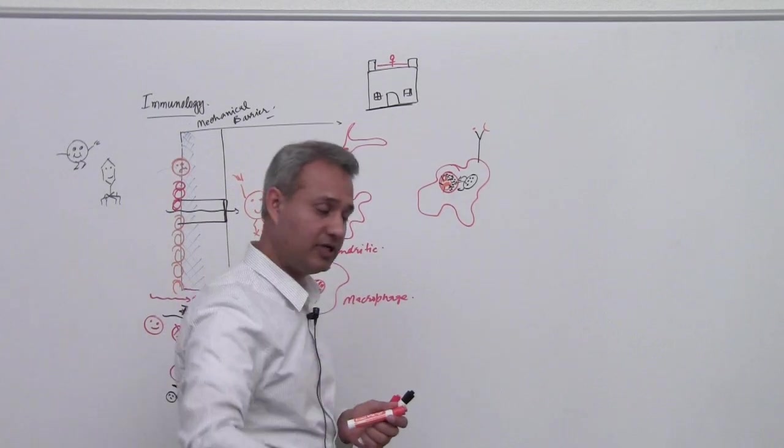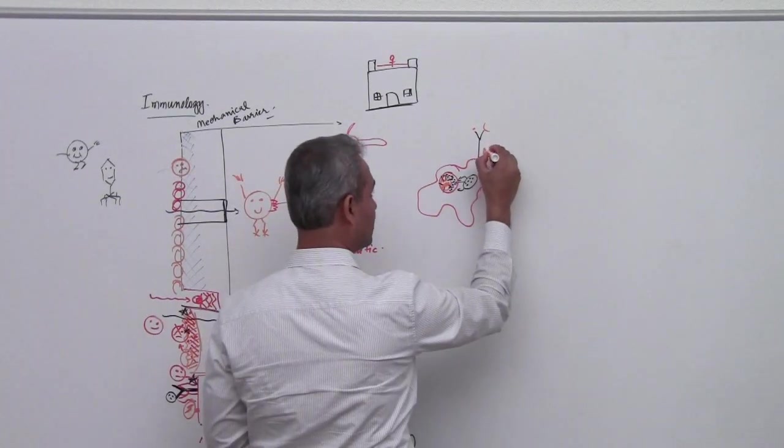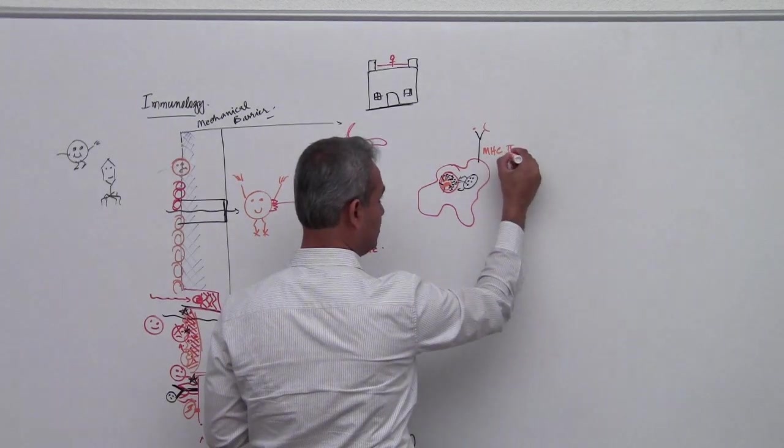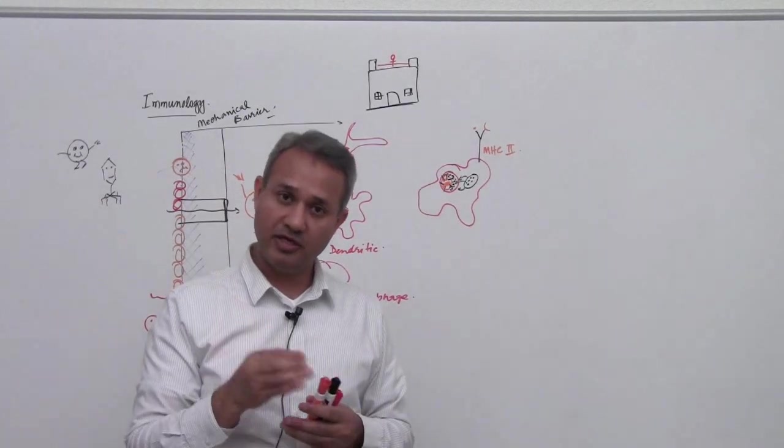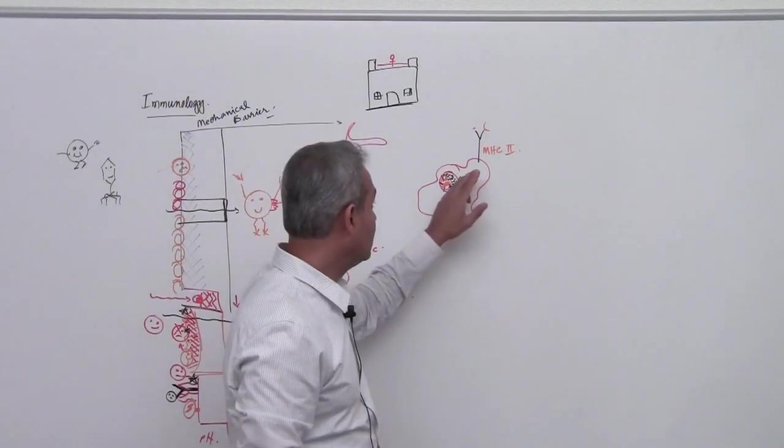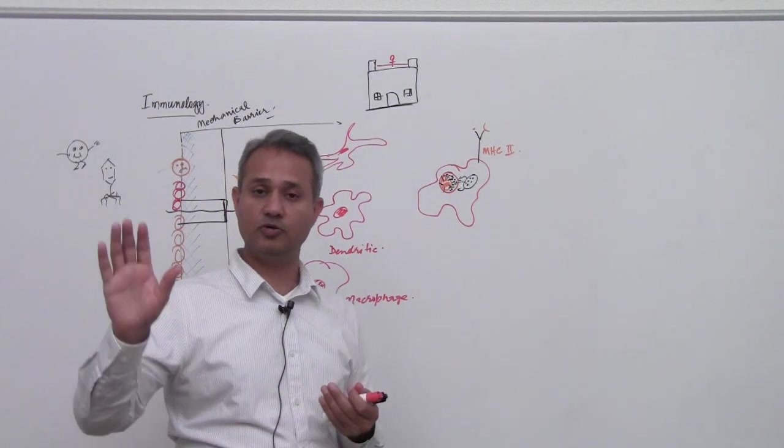You would see in our future lectures, this is MHC 2 or Major Histocompatibility Complex Number 2. But anyways, at this time, if we just say that there is a protein which is used to stick the parts of the bacteria or the pathogen to the outer surface.